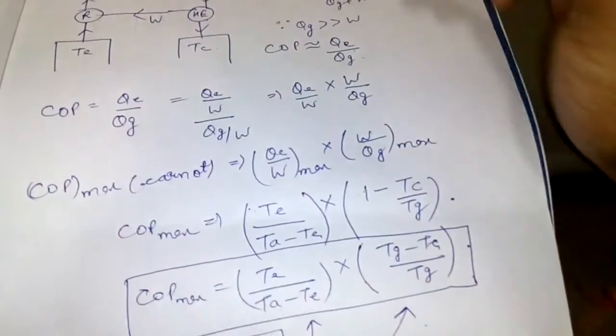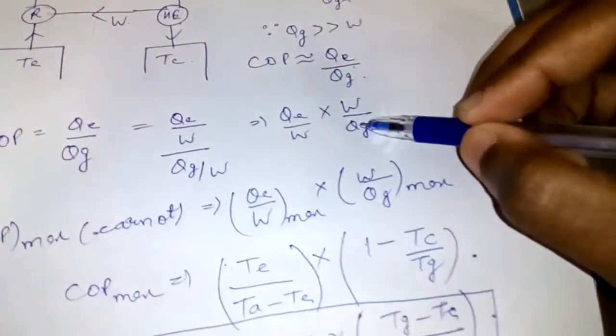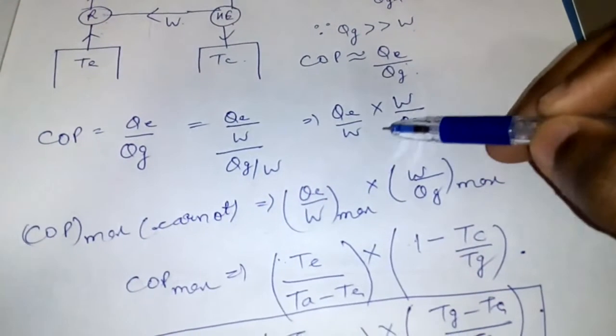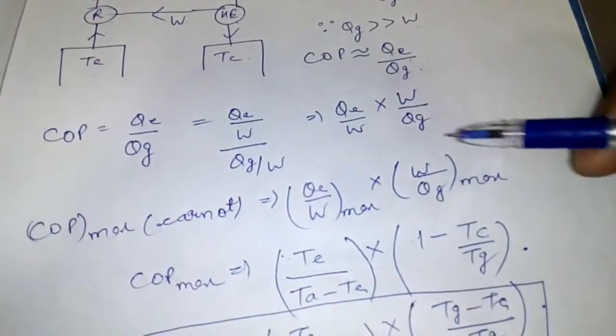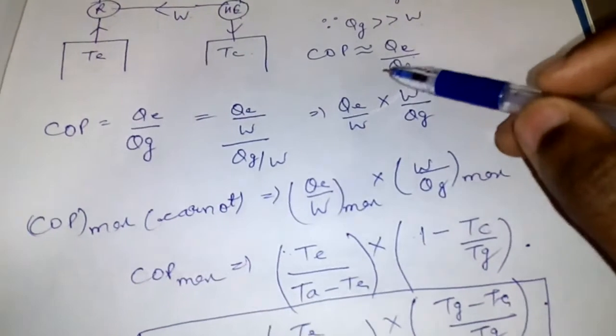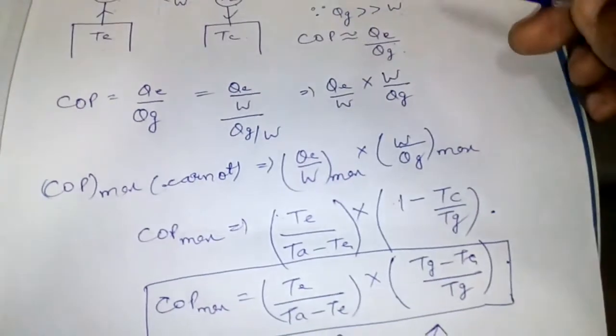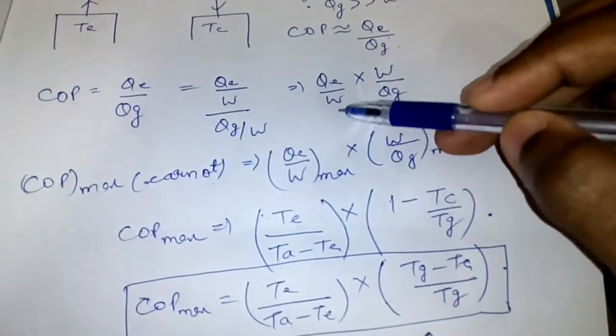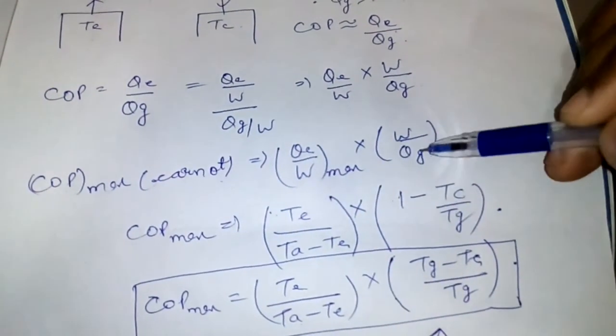Now multiplying and dividing by W, we can write COP equal to QE by W into W by QG. Now for maximum COP, none can be greater than Carnot, so COP maximum of Carnot is equal to QE by W max into W by QG max.